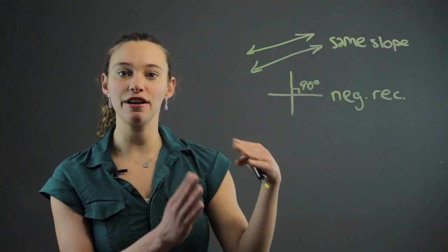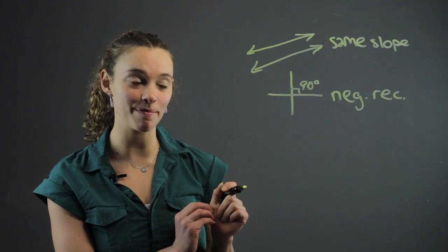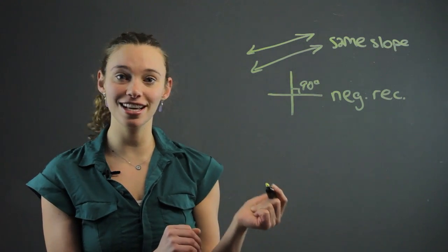So if one has a slope of 3 fourths, the other is going to have a slope of negative 4 thirds, the negative reciprocal. So those are two important things with lines.